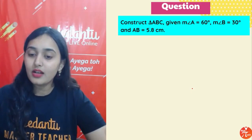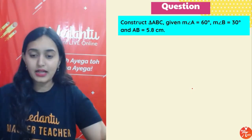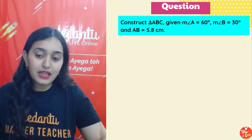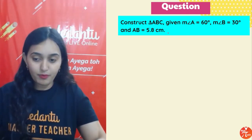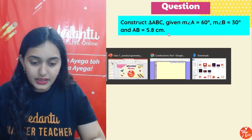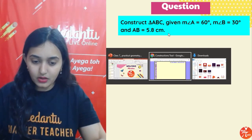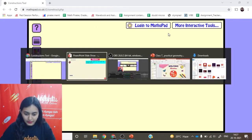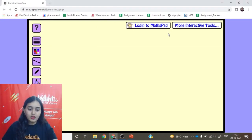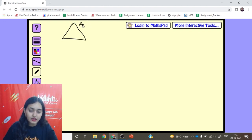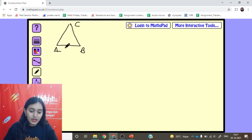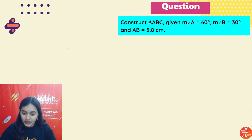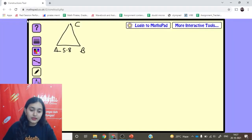Now let me do the construction practically. We have to construct triangle ABC in which angle A is 60°, angle B is 30°, and AB is 5.8 cm. First, let's draw a rough diagram. A and B are at the base, angle A is 60°, angle B is 30°, and AB is 5.8 cm — this is what we need to construct.